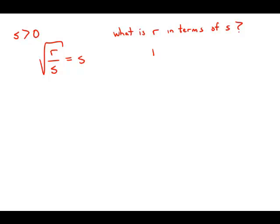What that means is that we want r equal to stuff with s in it. Okay, r is going to be by itself and some function of s or some algebraic expression involving s is going to be on the other side of the equation. So basically we want to take this equation and solve it for r.